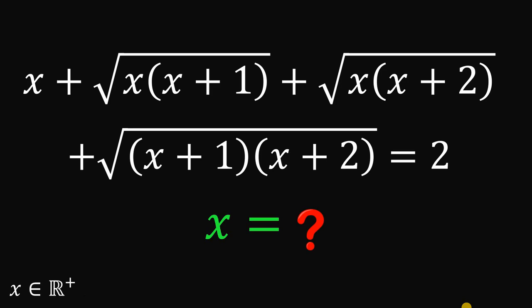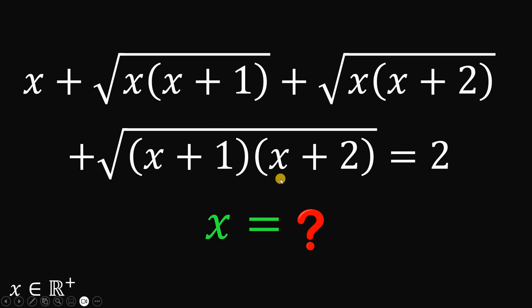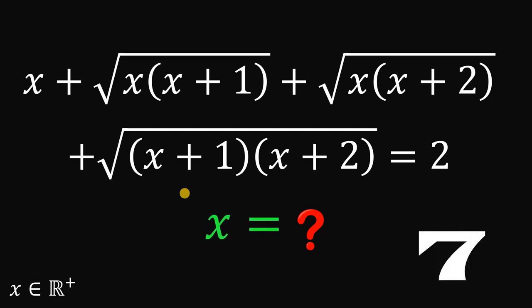Can you solve this algebra challenge? Here's the question. Solve for the value of x given this equation: x plus square root of x multiplied by (x plus 1), plus square root of x multiplied by (x plus 2), plus square root of (x plus 1) times (x plus 2), equals 2. You can pause this video if you want to give this problem a try.